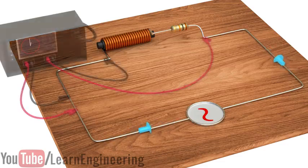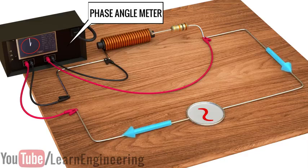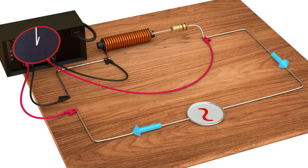Let us connect a phase angle meter to the circuit to measure the phase difference between the applied voltage and the current. You can see that the current flowing through the circuit is not in phase with the applied voltage. This is because of the presence of an inductive reactance in the circuit.